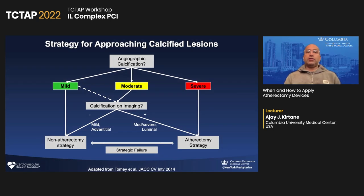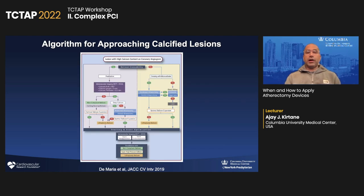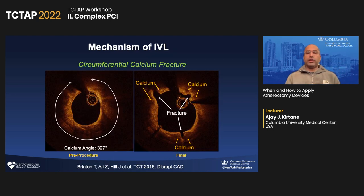As far as how we treat calcified lesions, by angiogram alone we can determine if things are mild or severe. In more moderate cases we use imaging to arbitrate. If imaging shows severe calcification, those are the cases we default to upfront atherectomy or plaque modification strategy — we don't want to struggle with balloons before failing and causing more severe complications. There are more recent algorithms incorporating lithotripsy. The majority of these algorithms suggest that if you see severe calcification, you should think of a strategy to address it and use imaging to guide what you do.